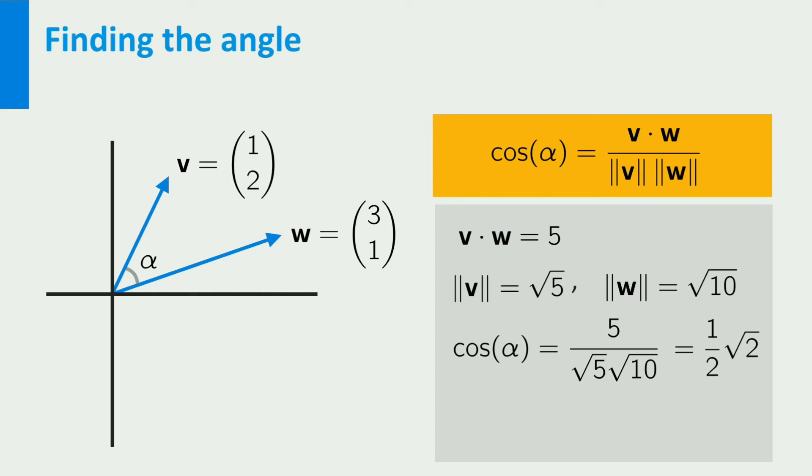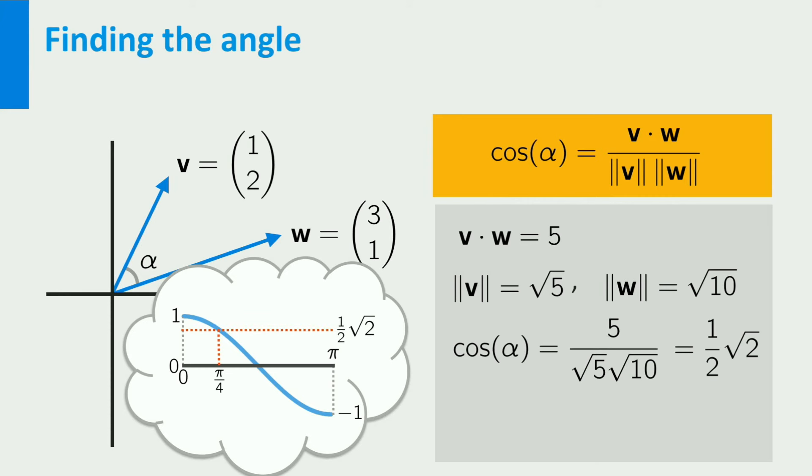Now, what is alpha? Well, clearly alpha has to be between 0 and pi. And in that interval, there is exactly one value for which cosine of alpha is 1 half times the square root of 2. Alpha equals pi over 4.